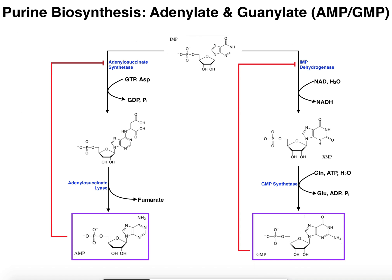In the first video, two videos ago, we looked at the synthesis of IMP. This was a fairly complicated process from ribose 5-phosphate to get IMP. Then in the second video, we saw that IMP could be shunted into one of two pathways — one gives you adenosine monophosphate, and the other gives you guanosine monophosphate.